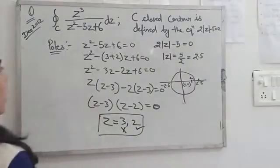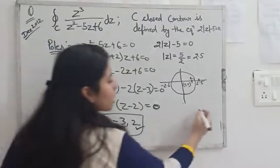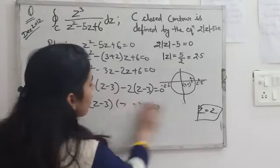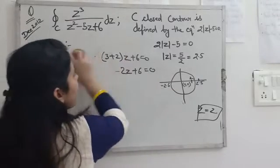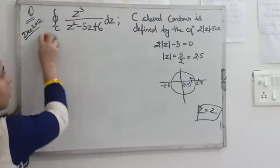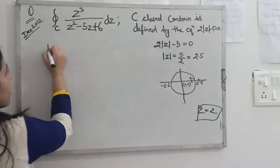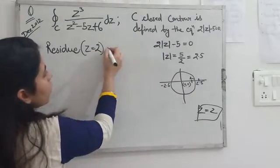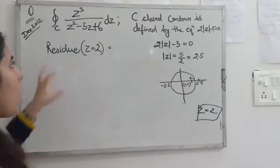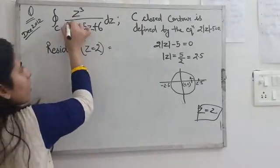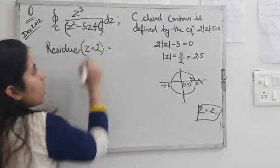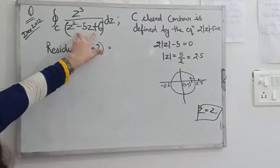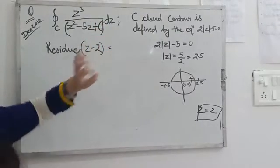After finding the poles, we checked which pole lies inside the given contour. The next step is to find the residue at z = 2. Before that, we should know that z = 2 is a simple pole. The overall power of this equation is 1, so any pole from this equation will be a simple pole.